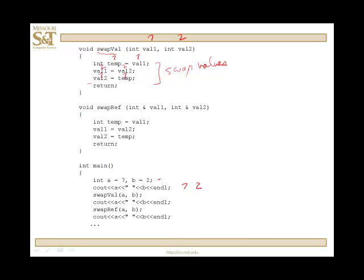But when we get back down here to main, what has happened? Well, remember this function here is popped off the stack. All those variables, temp, val1, val2, are gone. And when we output a and b, we get 7 and 2. Nothing has changed.